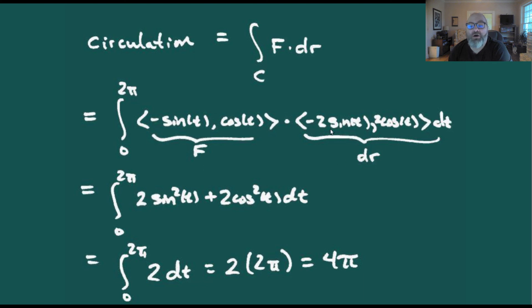Dr being negative 2 sin(t), 2 cos(t), that was our dr. We take the dot product of those which simplifying just gives us 2 dt for our integrand. Integrating that from zero to 2π just gives us a final result of 4π.